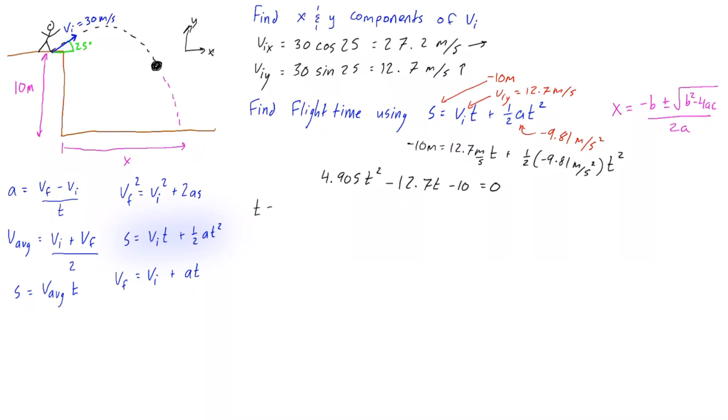We have t is equal to negative b, so that's going to be positive 12.7, plus or minus the square root of b squared, so we have negative 12.7 squared, minus 4 times a, which was 4.905, times c, which was negative 10. This is all over 2a, so that is 2 times 4.905.